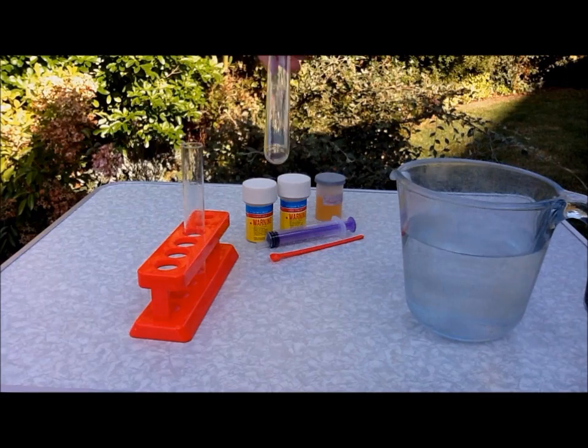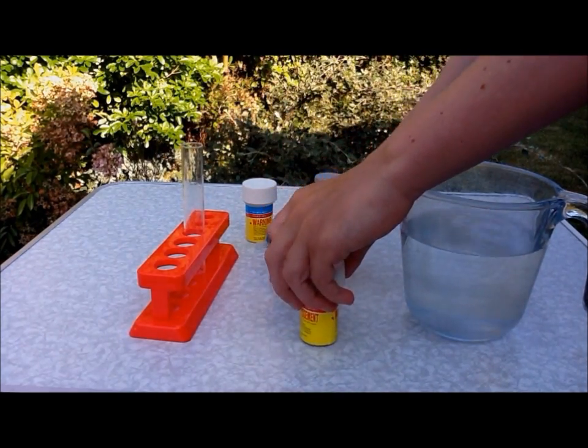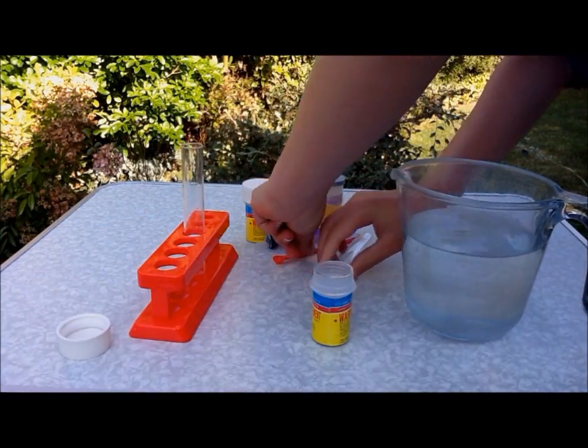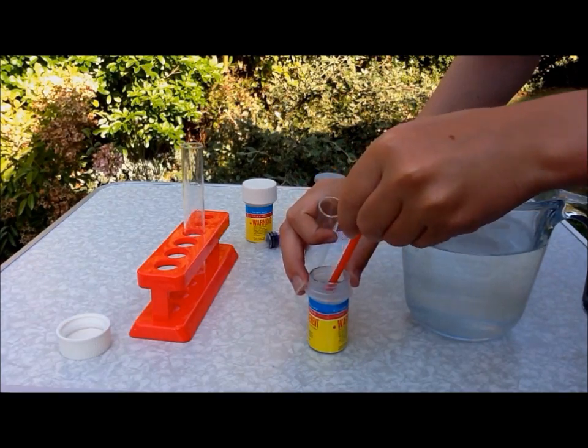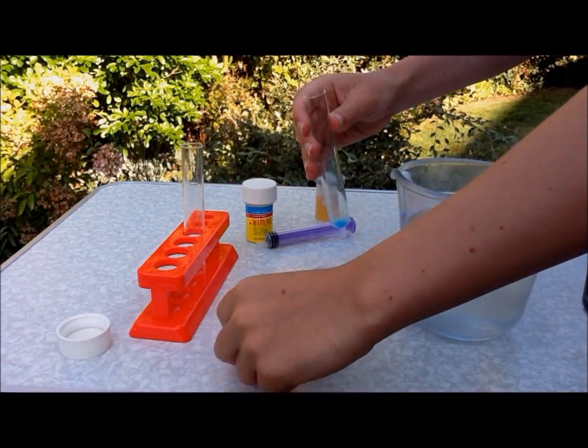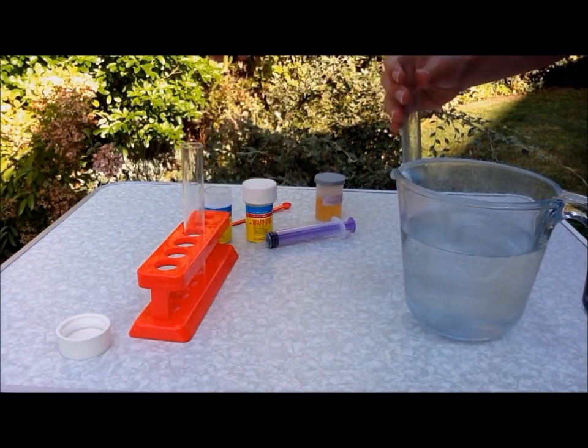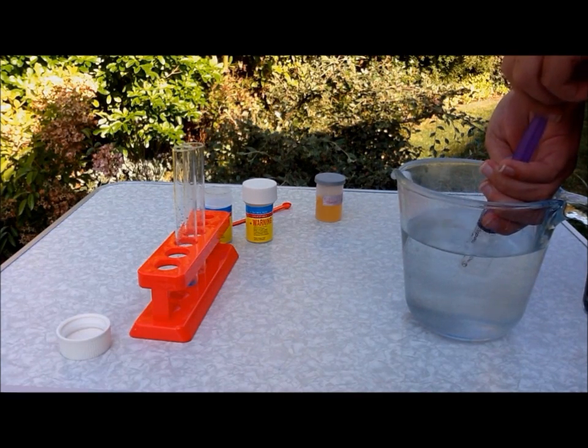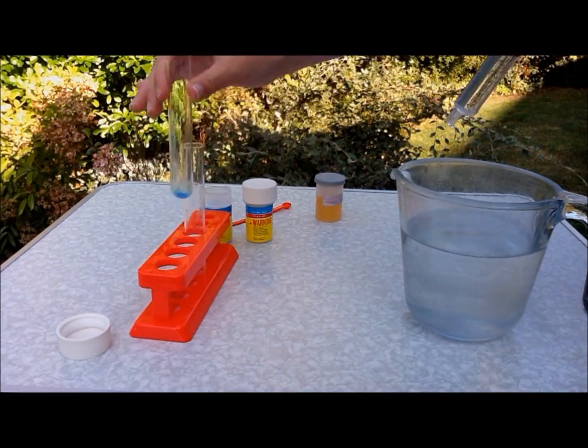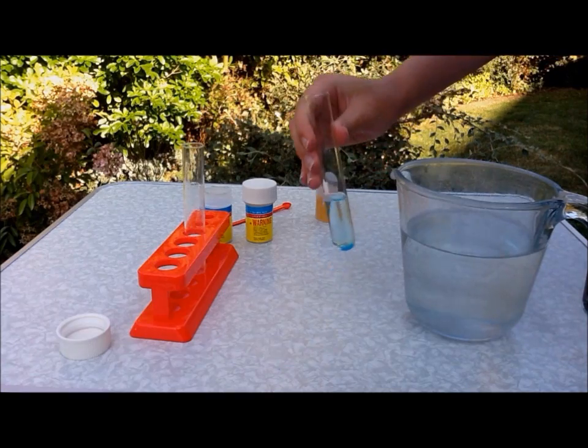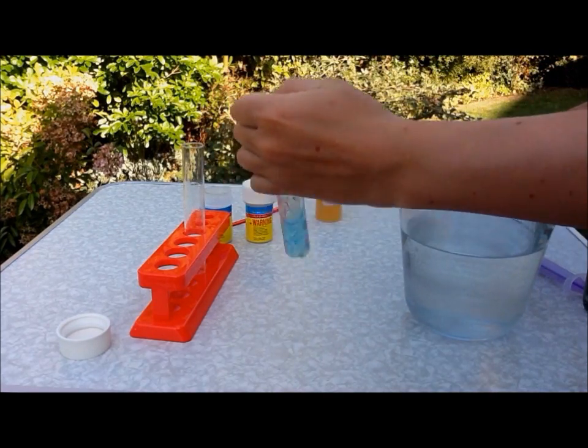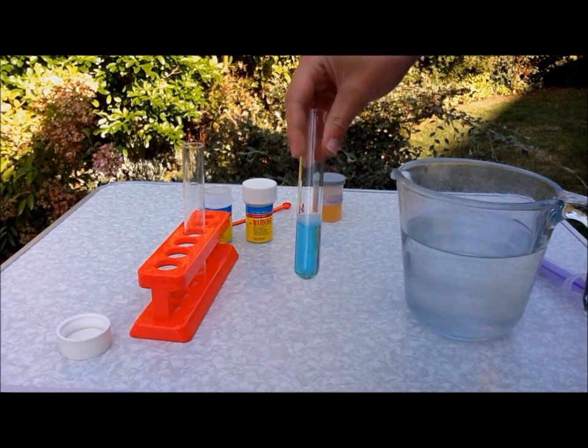So in your first test tube, you will need to get your copper sulphate and put about 0.3g in the test tube and dissolve that in 8ml of water. And then give it a swirl to dissolve and if necessary shake it. It should be a blue solution.